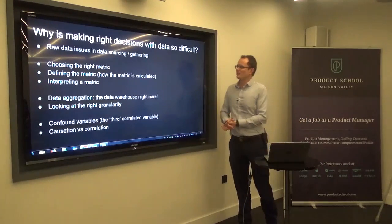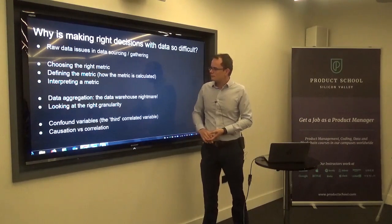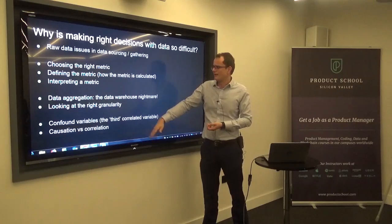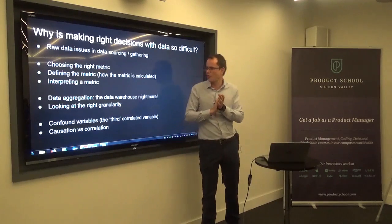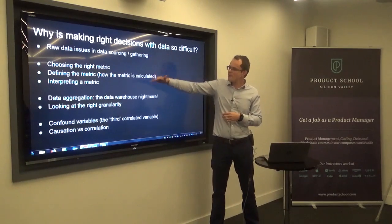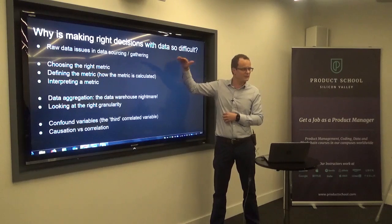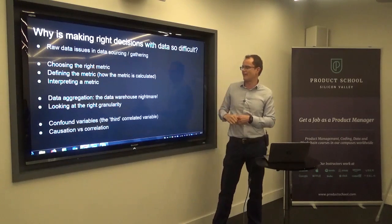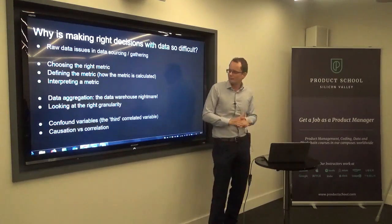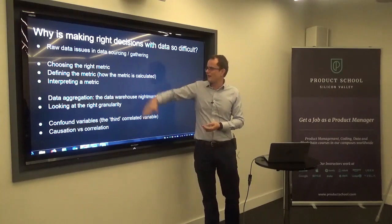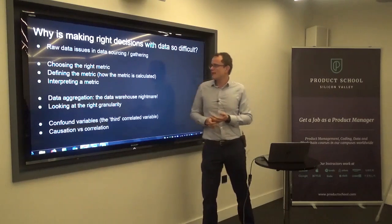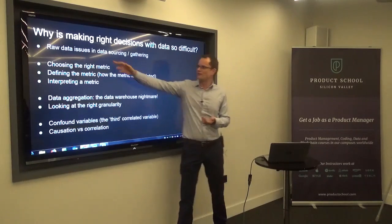So why is making the right decision with data so difficult? There are a number of things — this is just an example list of common aspects, but there can be more. The point is that there are a number of things that all need to go right in order to reach the right decision. If just one of these goes wrong, the whole decision will be wrong.